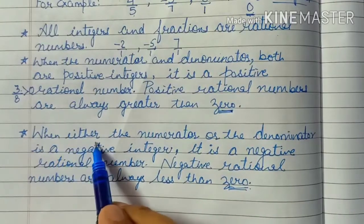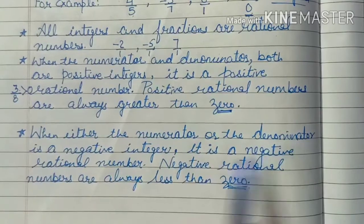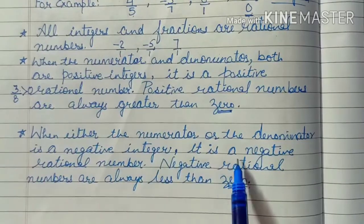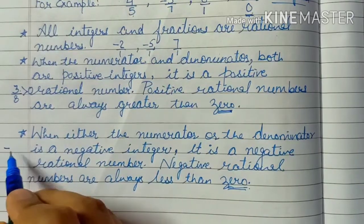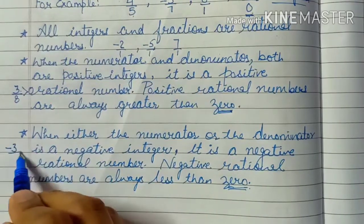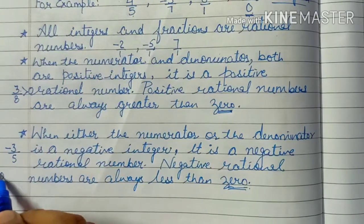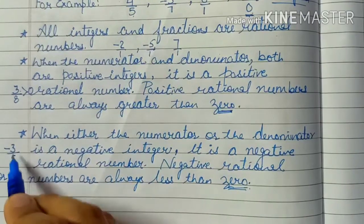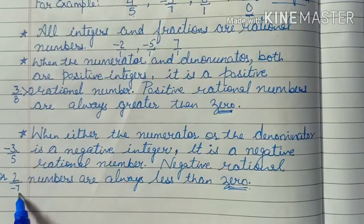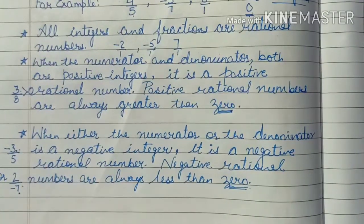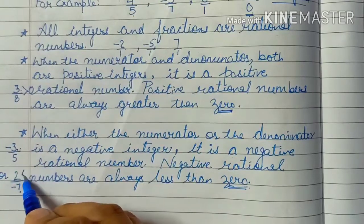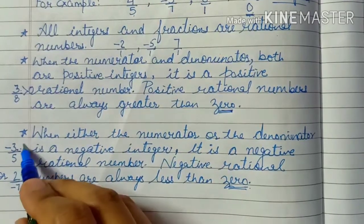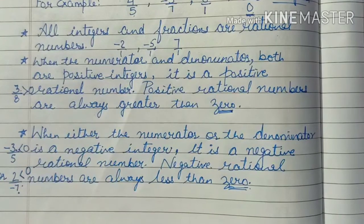When either the numerator or the denominator is a negative integer, it is a negative rational number. For example, minus 3 upon 5, or 2 upon minus 7 — here numerator is negative in the first, denominator is negative in the second. Both of these are negative rational numbers, and remember these numbers are always less than 0.